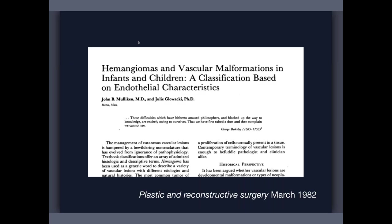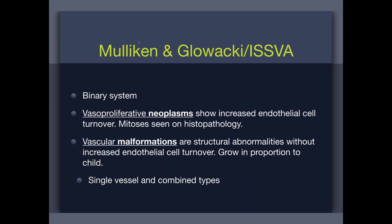Here's their seminal paper published in 1982. The components of this binary system: on one hand, neoplasms and tumors — pretty much one entity, the infantile hemangioma. If you have to learn one entity in the category of vascular tumors that occur in children, it's the infantile hemangioma. Everything else was not a tumor — they fall in the category of vascular malformations or structural abnormalities. These are lesions with channels that grow in proportion to a child's growth and don't have histopathologic features of tumors like mitosis or cell division.